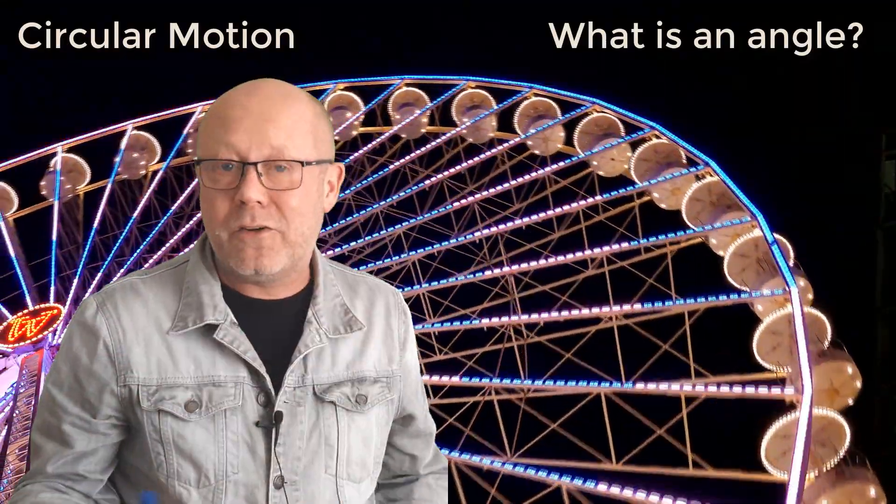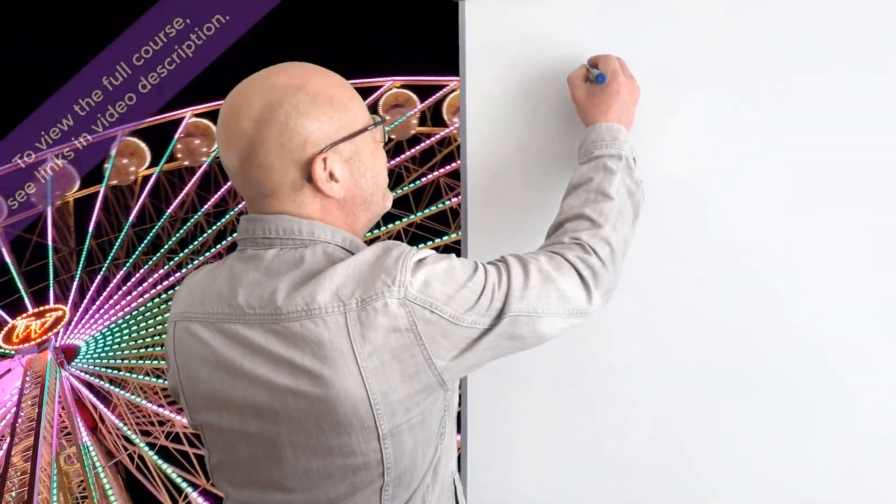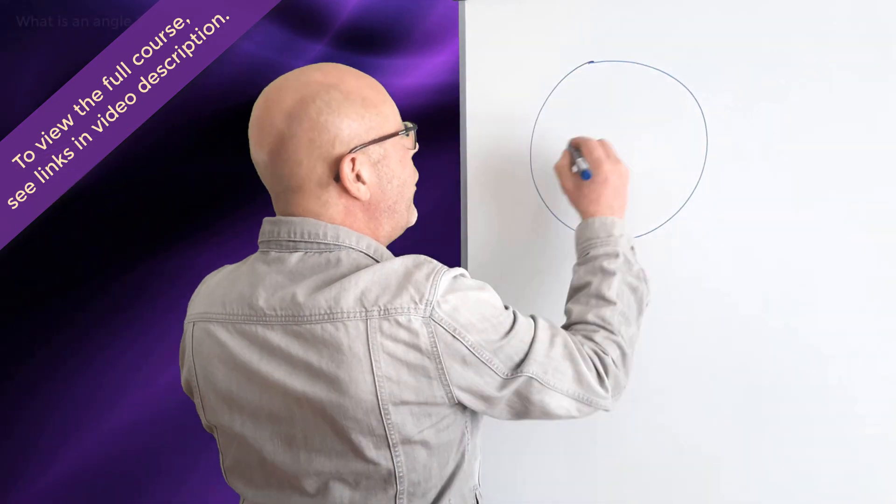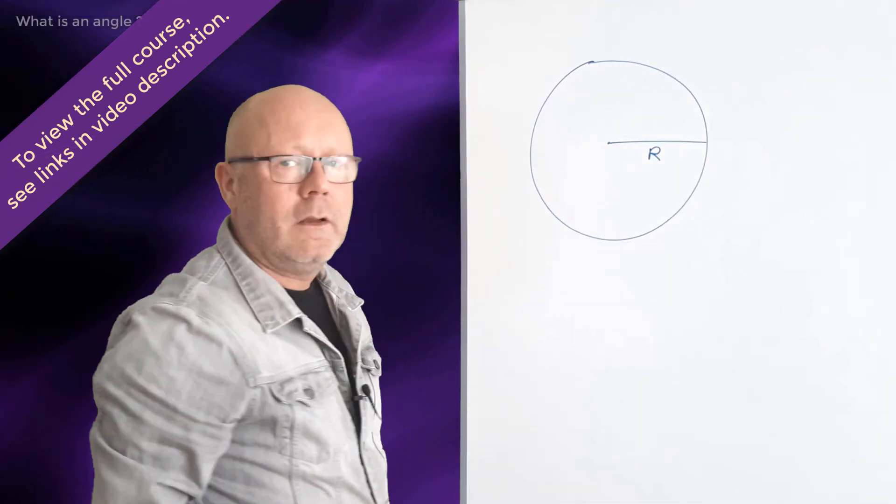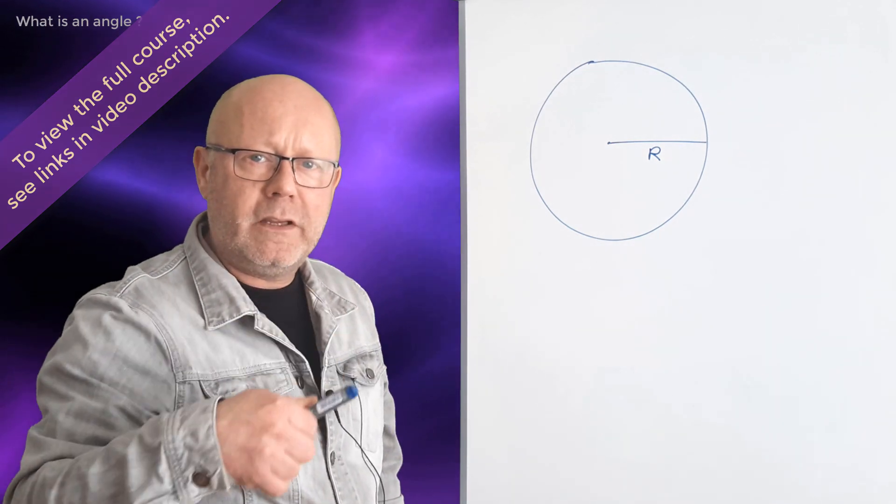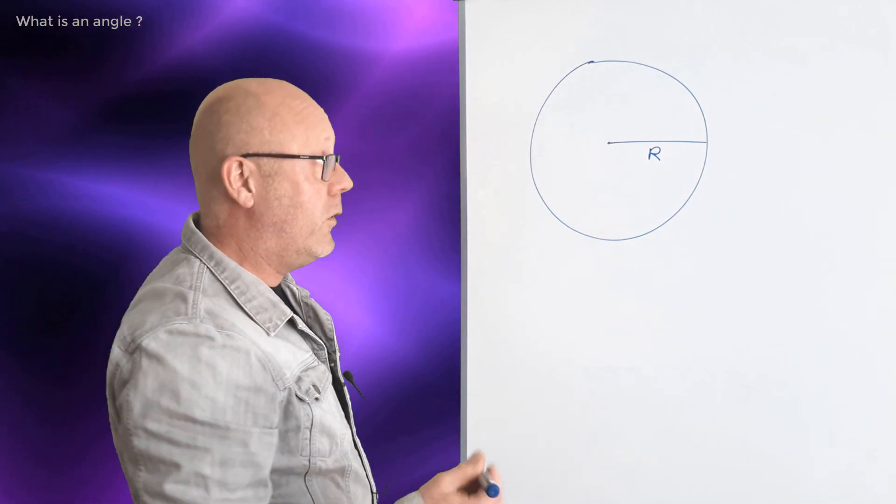This video is about circular motion, so let's draw a circle. A circle of radius r. Now let's imagine we have a body circulating around this circle, so in circular motion.